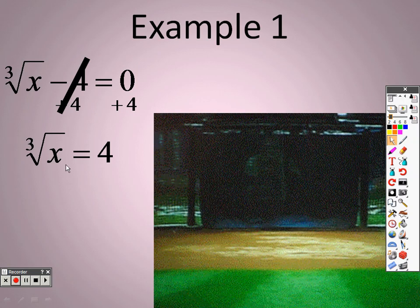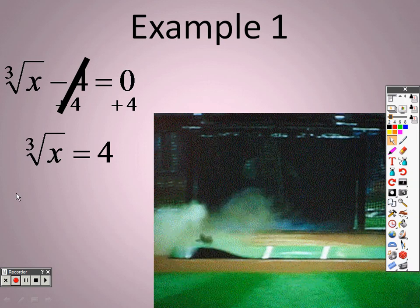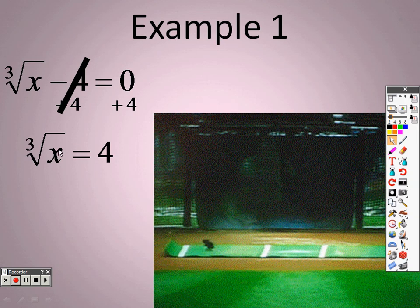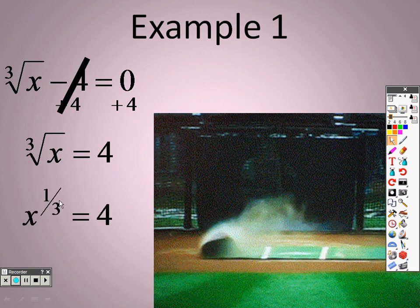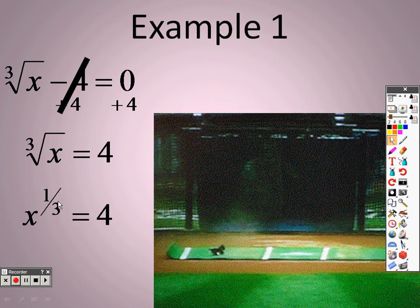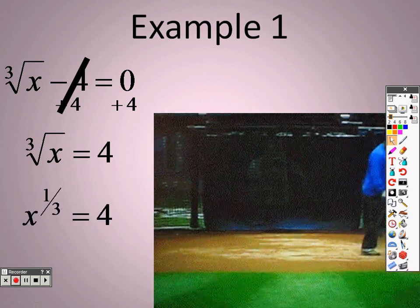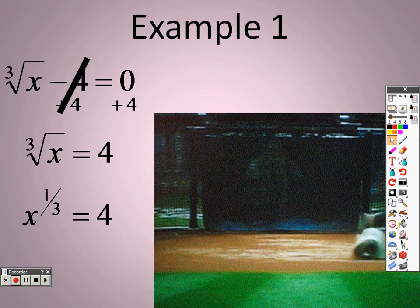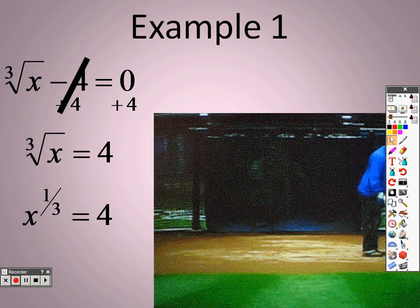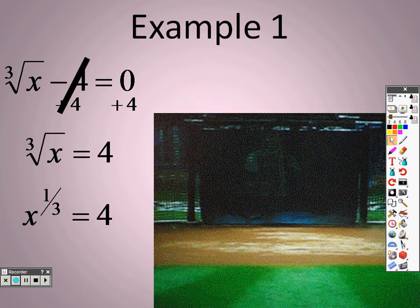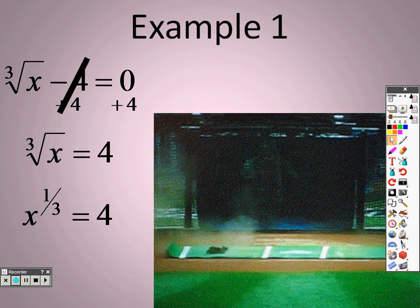Alright, no problem. To get the cube root all by itself, or to get x all by itself, I need to get rid of that cube root. And the cube root, if you remember, it's like saying we have x to the one-third power. I'm trying to figure out some way that I can get that exponent to be a 1. How in the world can I make that exponent a 1 while also getting x by itself? Well, it's actually much simpler than you think.